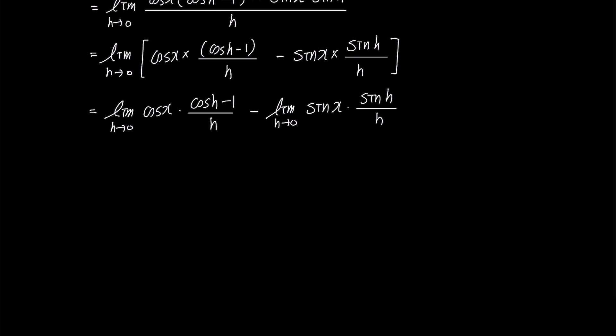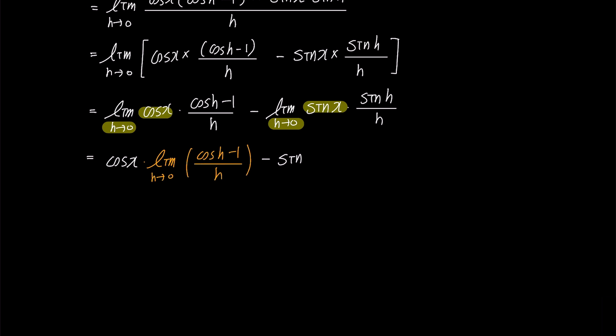Looking at the limit condition where h approaches 0, and since these limits are independent of x, we can bring the functions of x — cosine x and sine x — out in front of the limit. So it becomes cosine x times the limit of cosine h minus 1 over h, minus sine x times the limit of sine h over h.